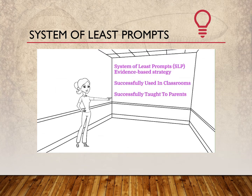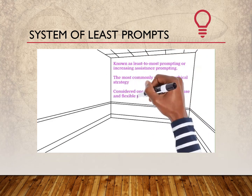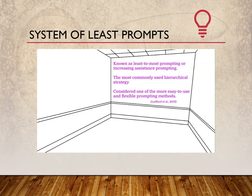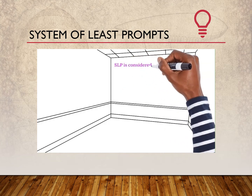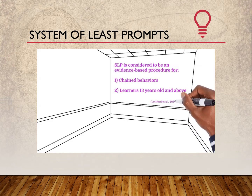As we said in our introductory video, System of Least Prompts is an evidence-based strategy that has been successfully used in classrooms and taught to parents to use in their homes. It is also known as Least to Most Prompting or Increasing Assistance Prompting, and it is one of the more commonly used hierarchical strategies within the response prompting repertoire because it is more flexible and easy to use than some of the other methods. This teaching method is considered to be evidence-based for teaching target behaviors and for learners who are 13 years old or above.